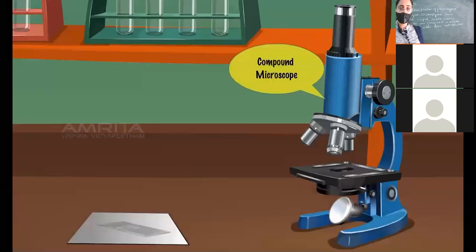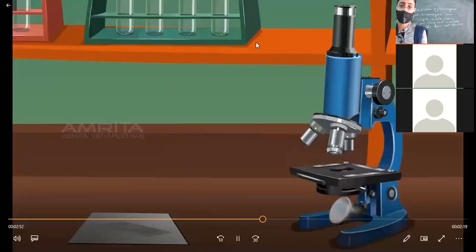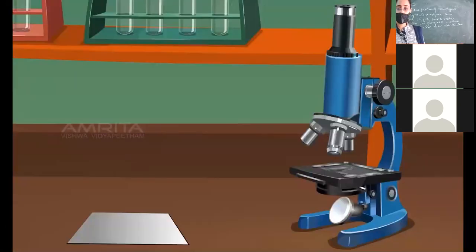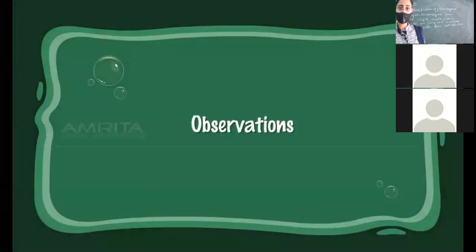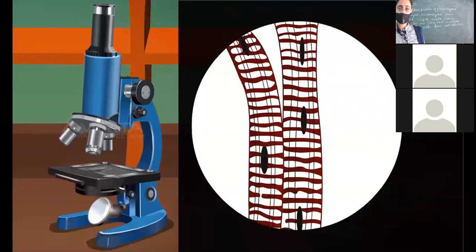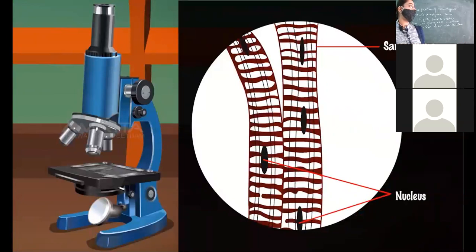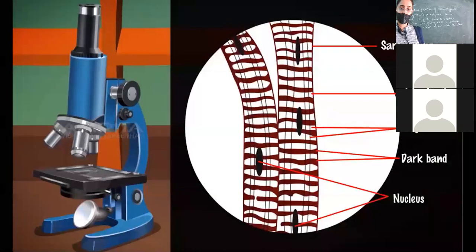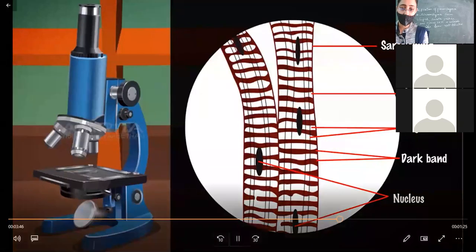Materials required for striated muscle: prepared slide of striated muscle tissue and a compound microscope. Procedure: place the prepared slide on the stage and observe through the lens. Observations: striated muscle cells are very long with cylindrical fibers enclosed within a membrane called the sarcolemma. These fibers are multinucleated. Each cell's cytoplasm consists of many myofibrils, each with alternate light and dark bands giving a striated appearance. This confirms the cells are striated muscle cells.